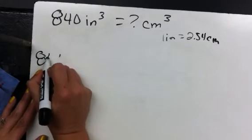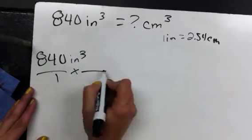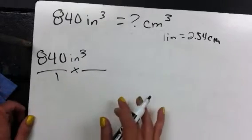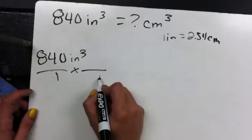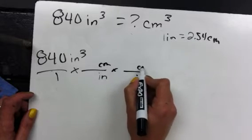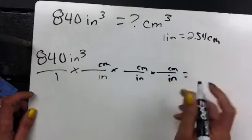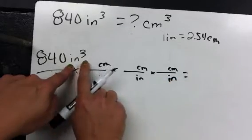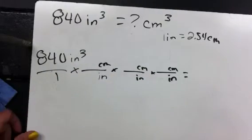So we're going to set it up just the same. 840 inches cubed over one. And like I said at the beginning, let's do them where you're physically seeing all the inches. So I'm going to go inches to centimeters, go again inches to centimeters, and again inches to centimeters. And the reason we're doing that is because this is cubed, so there's three of them. So one, two, three, that'll cross off, and then that'll give me my centimeters cubed on top.